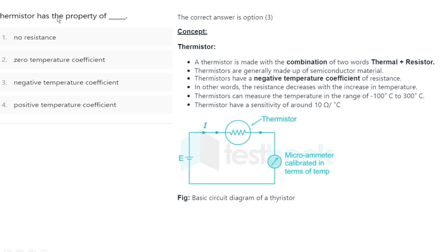The next question: a thermistor has the property of — options are no resistance, zero temperature coefficient, negative temperature coefficient, or positive temperature coefficient. The correct option is negative temperature coefficient. A thermistor is made from the combination of the words 'thermal' and 'resistor,' and thermistors are generally made of semiconductor materials and have a negative temperature coefficient.